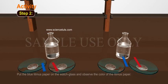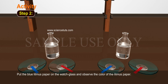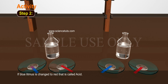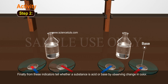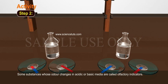Step 2: Test with blue litmus paper. Put the blue litmus paper on the watch glass and observe the colour. If blue litmus changes to red, that solution is called an acid. If red litmus changes to blue, that solution is a base. From these indicators, we can tell whether a substance is acid or base by observing the change in colour. Some substances whose odour changes in acidic or basic media are called olfactory indicators.